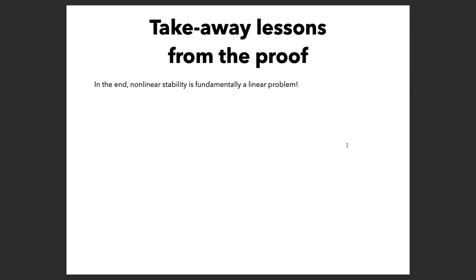If you're willing to pose absorbing boundary conditions at infinity, the story becomes more like the asymptotically flat story — perhaps even easier. But if you pose reflecting boundary conditions, pure AdS space is unstable with reflecting conditions. The jury is still out on what exactly happens in the black hole case. It's related to issues of weak turbulence for dispersive PDEs — a very interesting problem with the jury still out even in model problems like scalar wave equations on those backgrounds.